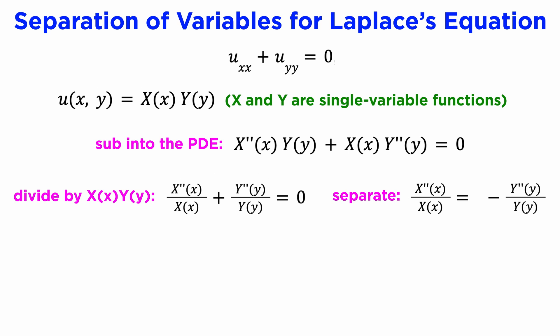We have now separated the variables, because each side of this equation only depends on a single different variable. Since the left side is a function of only x, and the right side is a function of only y, the only way for these statements to be true at the same time is if both sides are actually just the constant function.